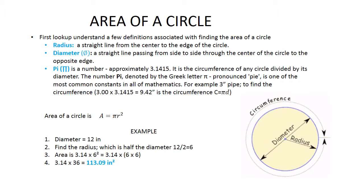Pi is the number that equals approximately 3.145. It is the circumference of any circle divided by its diameter. So the area of a circle is A equals pi radius squared.